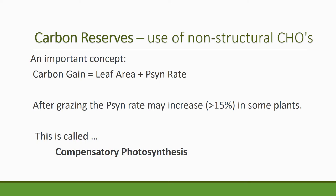Now let's try to understand carbohydrate reserves. Our job as managers is to think about how much energy plants need and whether they have the ability to recover. There is an important concept called carbon gain — the amount of leaf area plus the photosynthetic rate. When a plant is photosynthesizing, if you remove some of the photosynthetic material, the remaining photosynthetic material might actually increase its rate — up to 15 percent in some plants. This is called compensatory photosynthesis. So if an animal comes along and grazes off some leaves, the remaining leaves could increase their photosynthetic rate up to 15 percent. Some plants do it better than others.